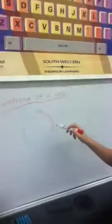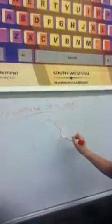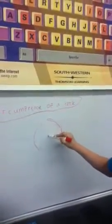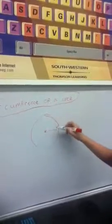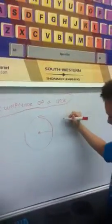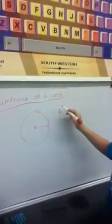So you would have a circle, a really bad one. Okay, so halfway through it would be the radius. Radius, okay, so let's say the radius equals 2.